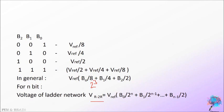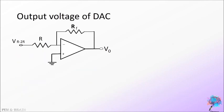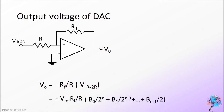Output voltage of DAC. To find the output voltage of DAC, we have to redraw the DAC circuit with the Thevenin's voltage and the resistance as given. The output voltage expression is minus RF by R into V R2R. We have to substitute the value of V R2R and we get the final expression like this.